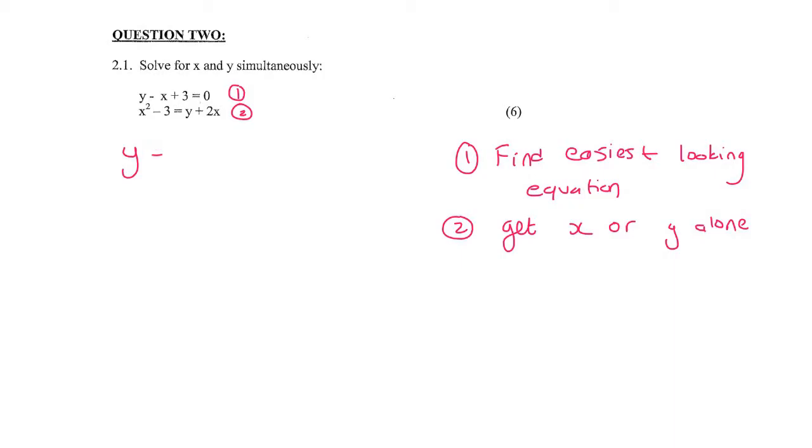Let's first write it down normally. y minus x plus three equals zero and so y equals x minus three. So all I did was I got the y alone and I'll call this number three now because it's a new one.